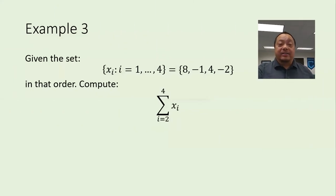Now a different kind of example. Given a set of numbers x sub i for i from 1 to 4, which equals 8, negative 1, 4, negative 2 in that order. What it means is x sub 1 equals 8, x sub 2 equals negative 1, x sub 3 equals 4, x sub 4 equals negative 2 in the same order that the numbers are listed. Compute the sum of x sub i for i from 2 to 4.